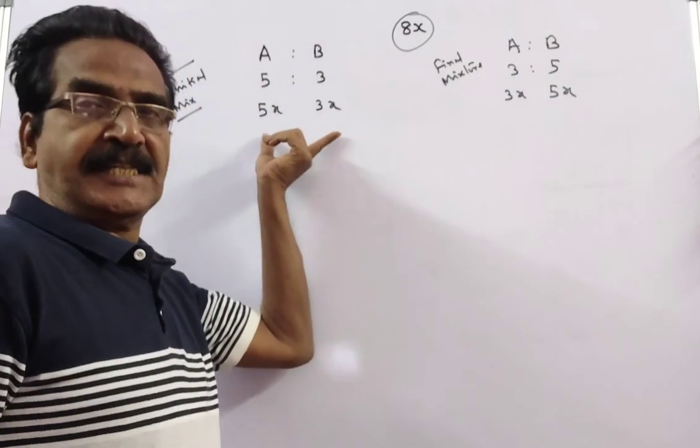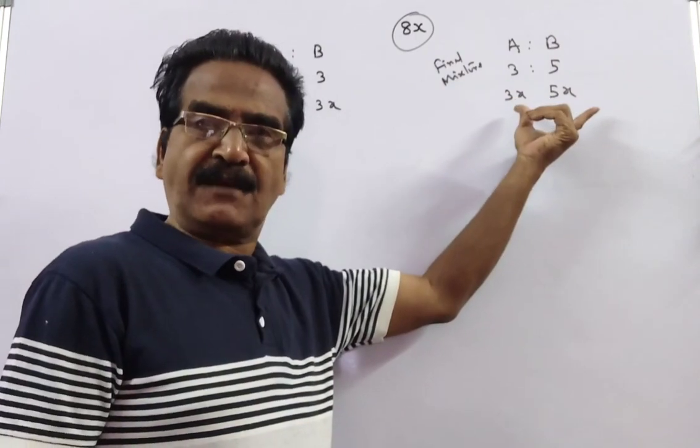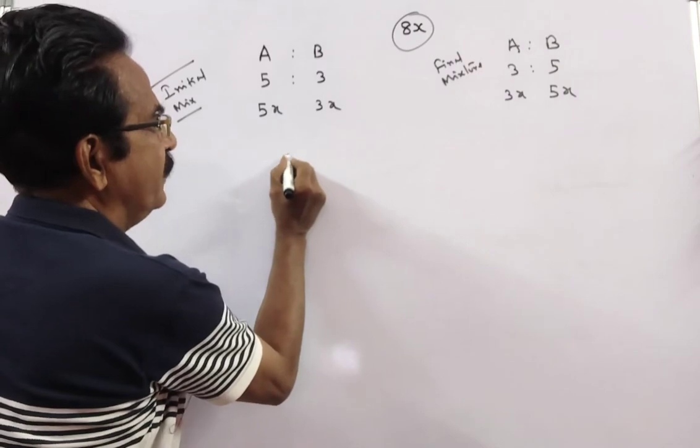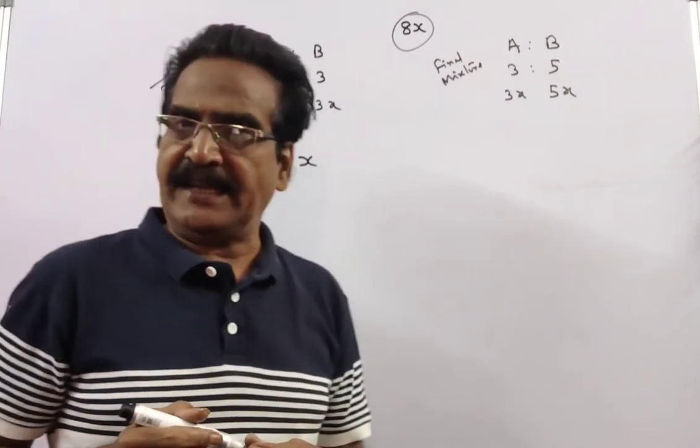So, this is the initial position of A and B. This is the final position of A and B. See friends, the initial position of liquid A is 5x liters.